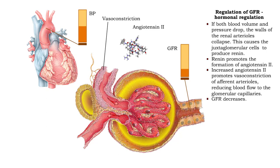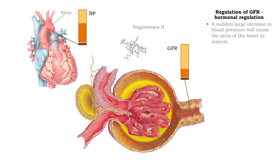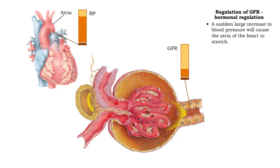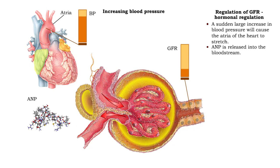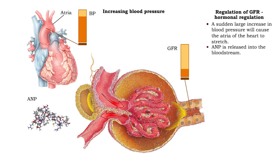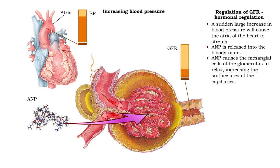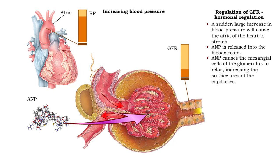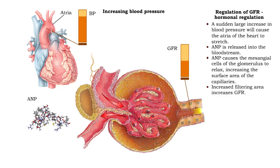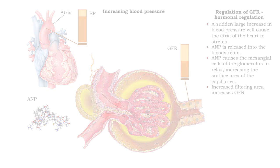Glomerular filtration rate decreases. If there is a sudden large increase in blood pressure, the atria of the heart are stretched. Atrial natriuretic peptide is released into the bloodstream. Atrial natriuretic peptide causes the mesangial cells of the glomerulus to relax, increasing the surface area of the capillaries. An increased filtering area increases glomerular filtration rate.